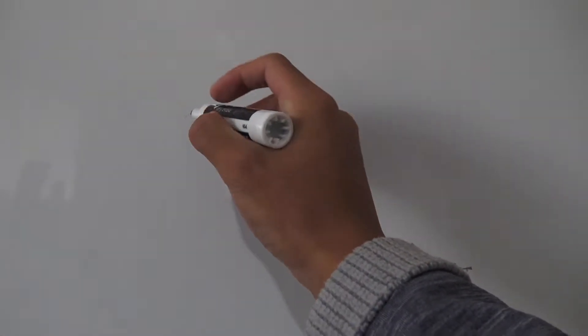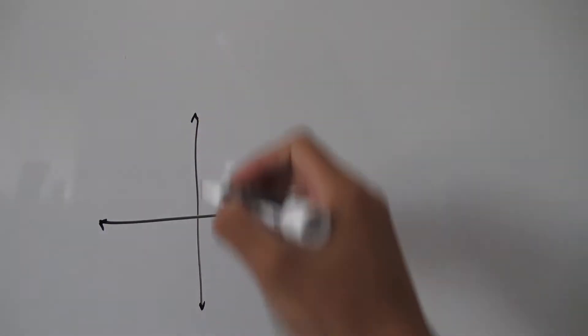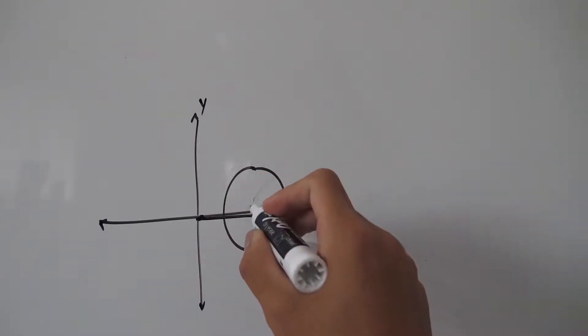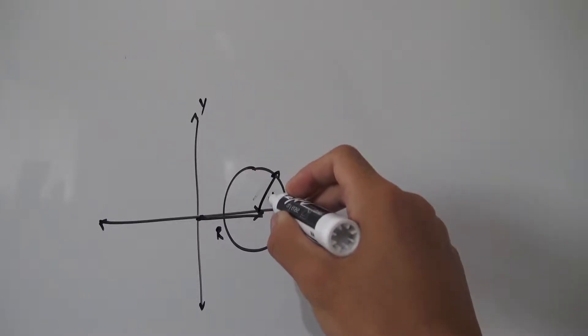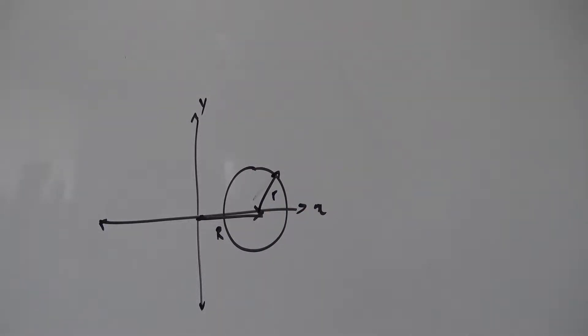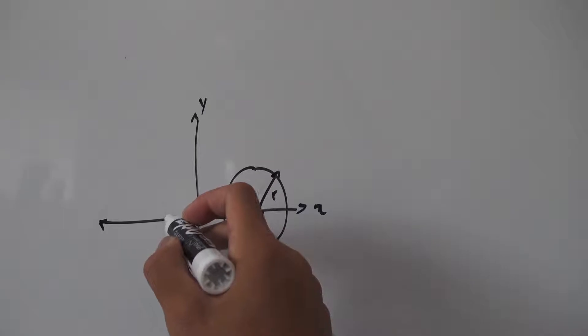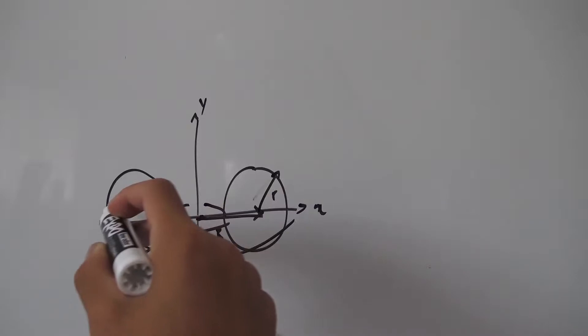Hello everybody, and today we're going to be finding the surface area of a donut. Let's first draw up some axes. What we want to do is consider some circle that's offset a distance of capital R away from the origin, and this circle will have some radius little r. We want to revolve this circle around the y-axis, and if you do that, the shape you generate is a donut, which is exactly the shape we're interested in.